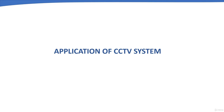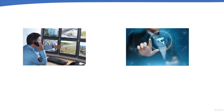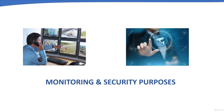This chapter is about the applications or uses of CCTV systems. CCTV systems are mainly used for security and monitoring purposes and have various applications in different areas. It is an excellent video surveillance solution that not only enhances security and facilities monitoring but is also very useful in general observation.